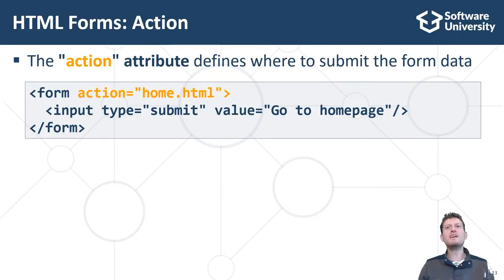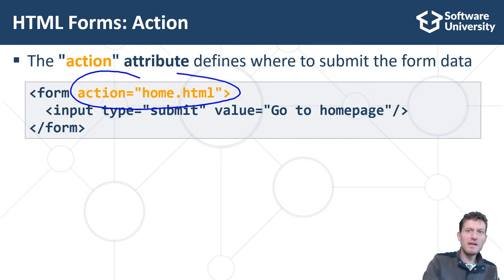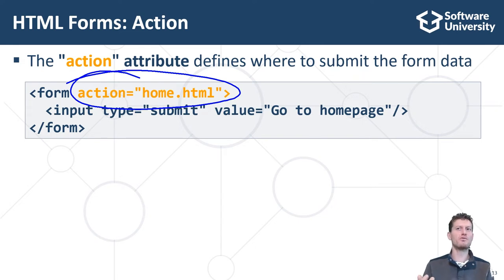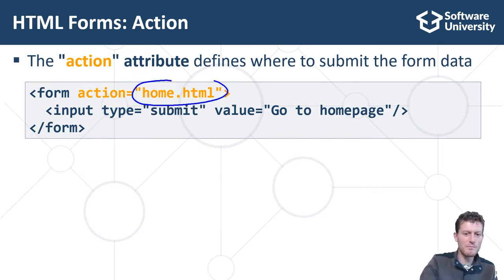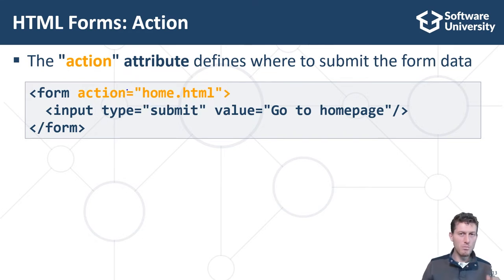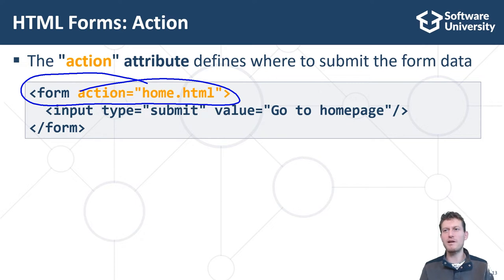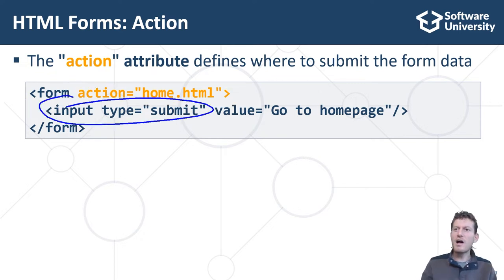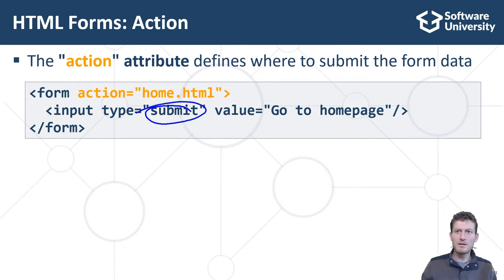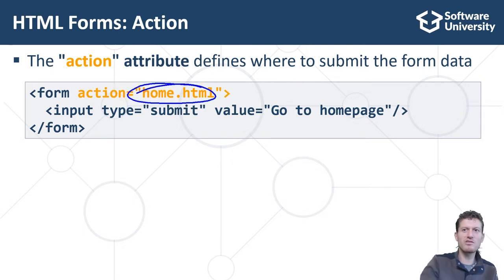In HTML forms, the action attribute defines where to submit the form data. If we write form action equals home.html, this means that the fields inside the form will be sent to the home.html script at the server side when the form is submitted. Most HTML forms have the form tag with some action URL, a set of input fields, and a submit button. The submit button sends the form data to the specified URL in the action attribute.